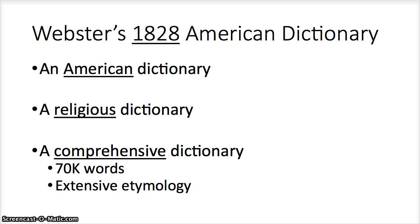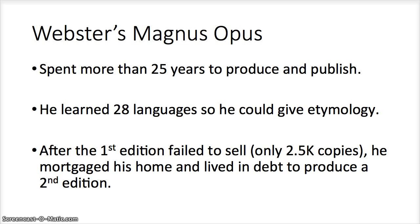The third point is that it was a comprehensive dictionary. It had a huge number of words — 70,000 — and it had an extensive etymology providing the background and a deeper understanding of where these words came from. It provided so much detail because Webster poured himself into this. This was his magnum opus. He spent more than 25 years to produce and publish this dictionary.